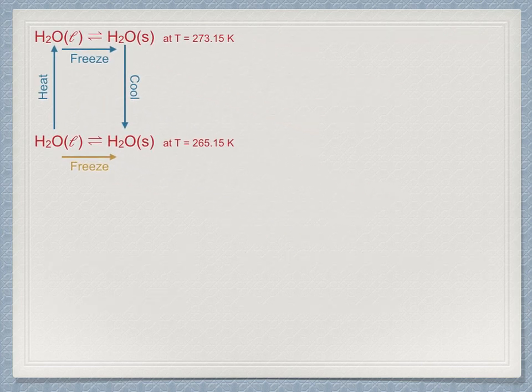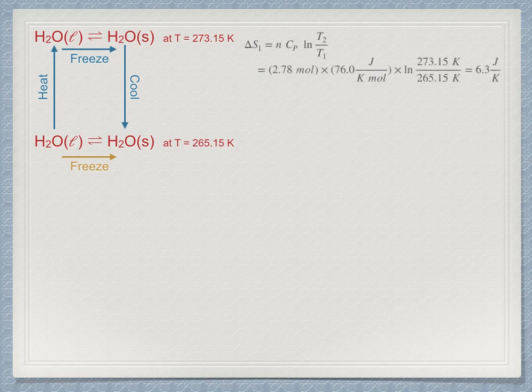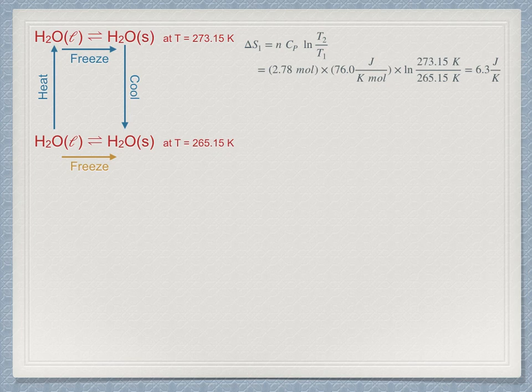First, the entropy calculations for the first step, warming up the liquid water to the freezing point, a positive 6.3 joules per Kelvin. It makes sense for it to be positive because warming something up requires the injection of heat, and this must increase the entropy.